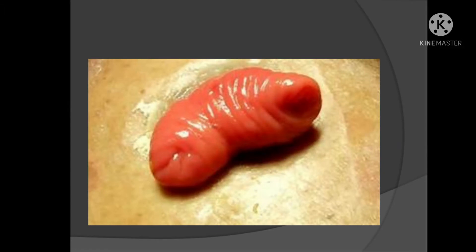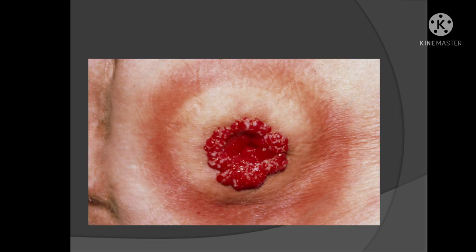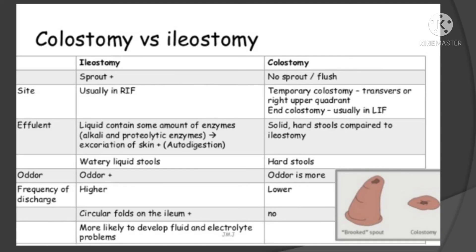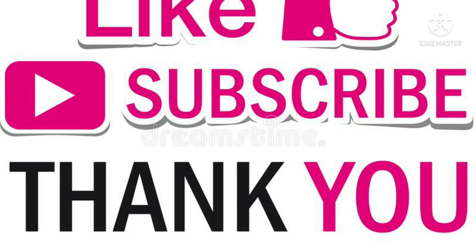In ileostomy, the content is more liquid and contains digestive enzymes, so the skin around the ileostomy is usually excoriated due to these enzymes — this problem does not occur with colostomy. When making an ileostomy, the ileum is brought out to the skin in a spout fashion so that liquid content goes directly into the bag, while colostomy is usually flushed with the skin. In ileostomy, patients complain of dehydration and diarrhea-like symptoms, which are absent in colostomy. The chances of prolapse are more in colostomy compared to ileostomy.